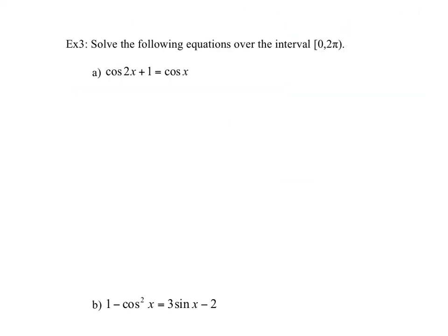So solving the equation over this interval — we just want the first revolution solutions. Notice we have cos 2x plus 1 equals to cos x. Those two angles are not the same, so we're going to have to change this. We have identities from your formula sheet where we can change cos 2x. Because we already have cos in the equation, we're going to choose the identity that only has cos. So for cos 2x, we're going to choose 2 cos squared x minus 1. So we have (2 cos squared x minus 1) plus 1 equals cos x, which simplifies to 2 cos squared x equals cos x.